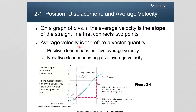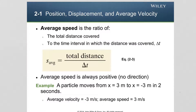The average velocity is a vector quantity. When the slope of the straight line is positive, the average velocity is positive; when the slope is negative, the average velocity is negative. One more quantity associated with average velocity is the average speed. The average speed is defined as the total distance covered divided by the time interval delta t. The average speed is always positive — it is a scalar quantity with no direction.